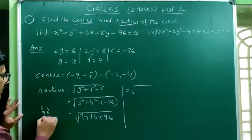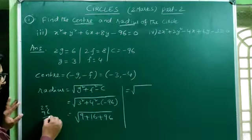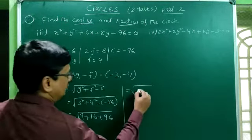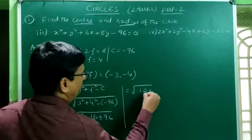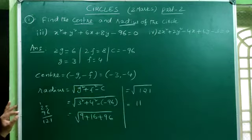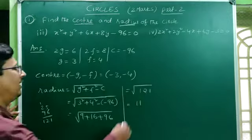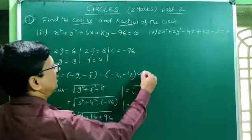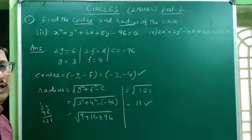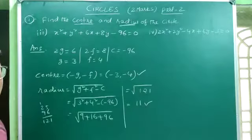25 + 96 = 121. So r = √121 = 11, since 11² = 121. The center of the circle is (−3, −4) and the radius is 11.